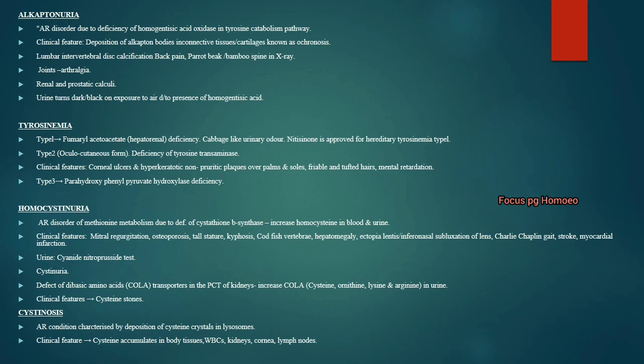Cystinosis is an autosomal recessive condition due to deposition of cystine crystals in lysosomes. The patient presents with cystine accumulation in body tissues including WBCs, kidney and cornea.